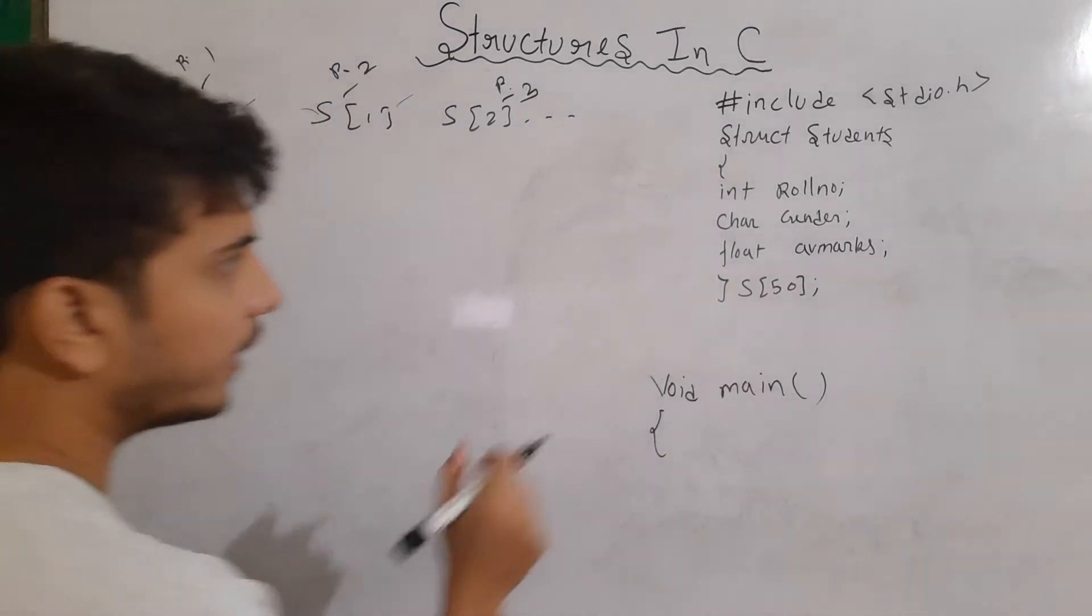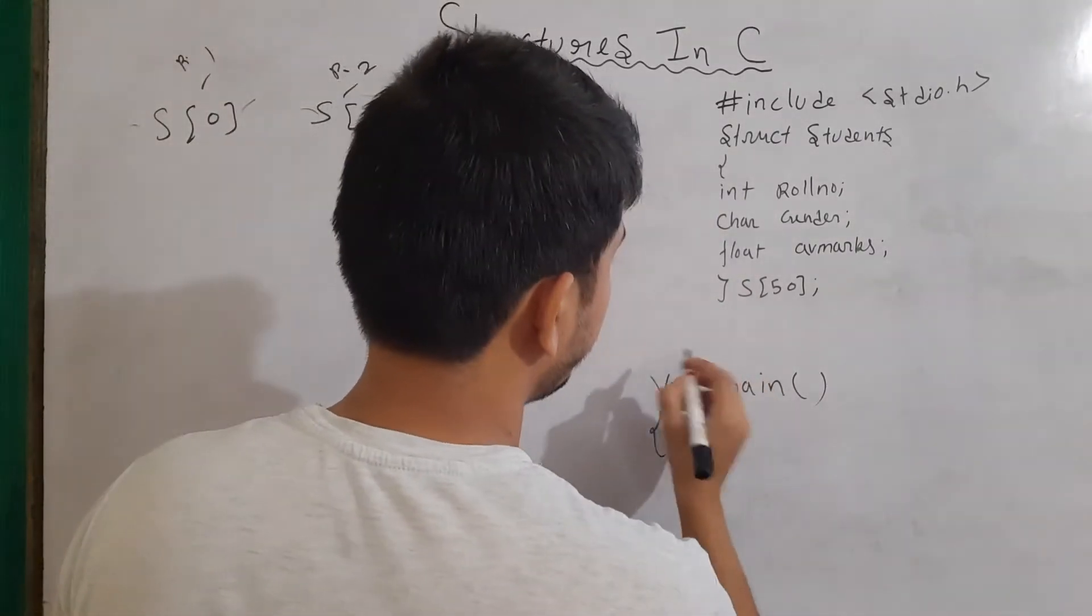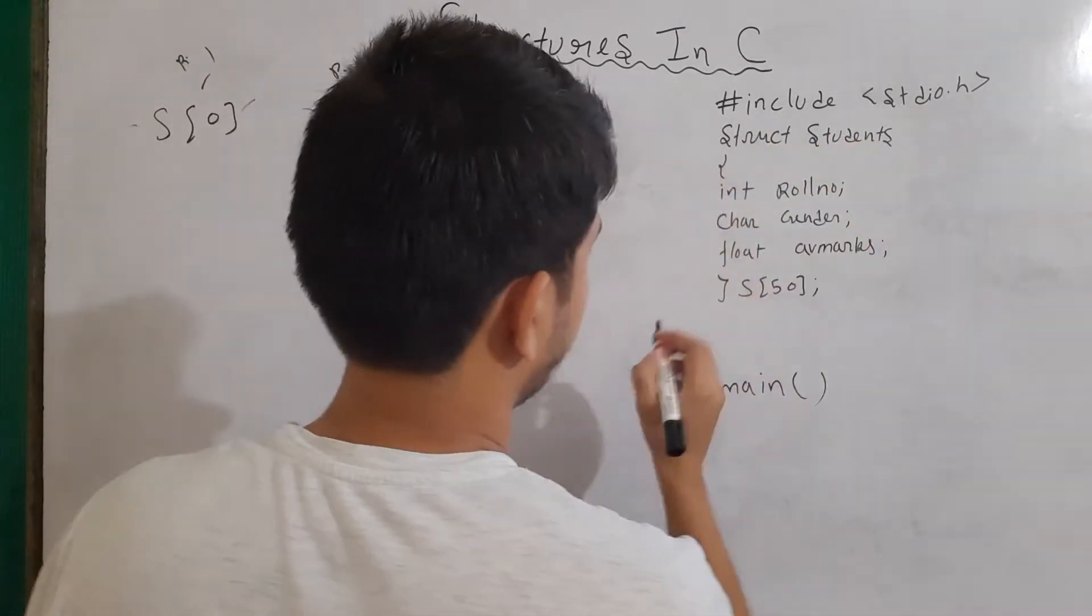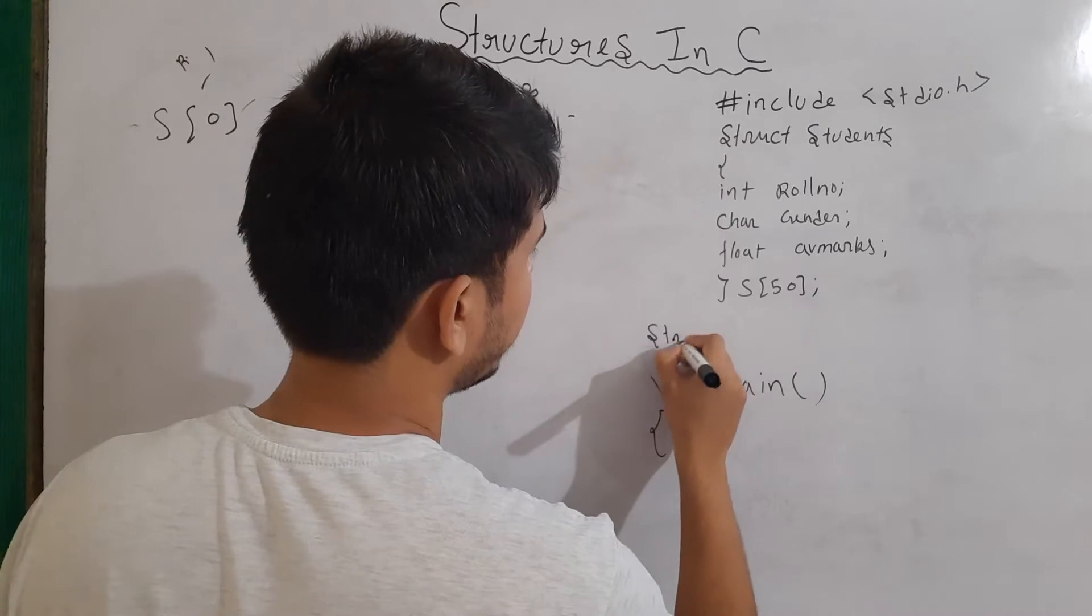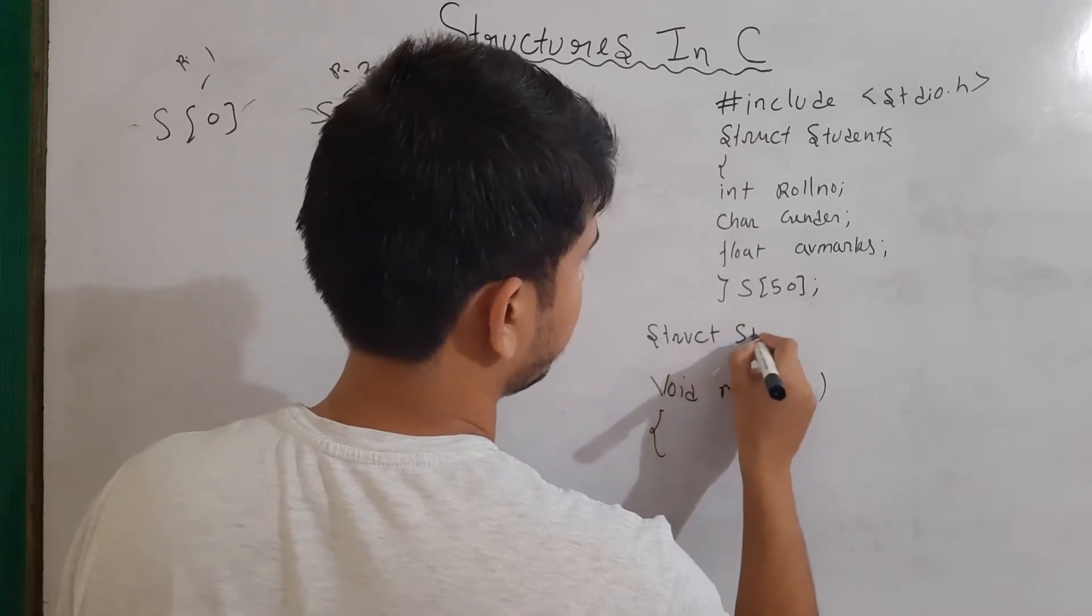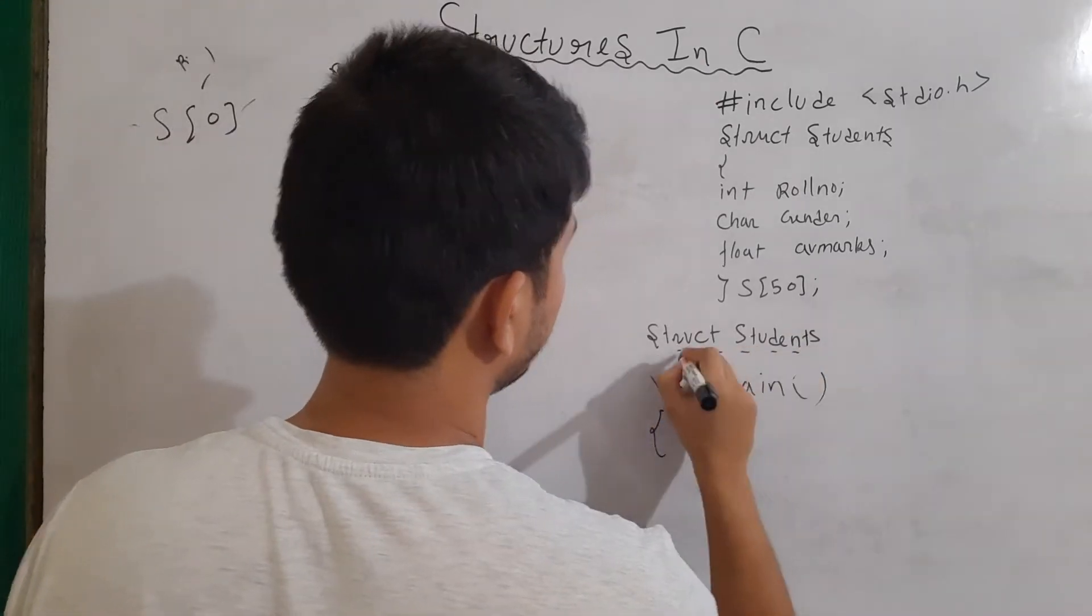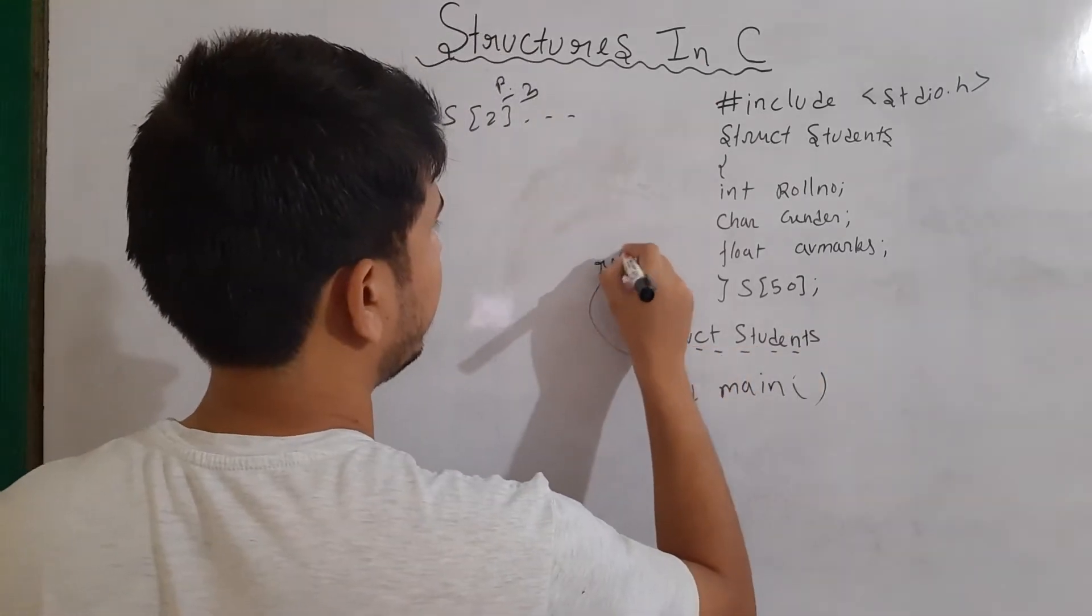Now, in the function prototype, in the return type, we will write the data type of structure, basically struct students. So, I'll write here struct students. This will be our return type for our function.